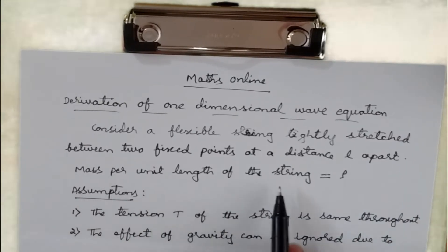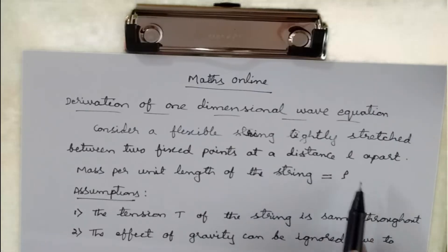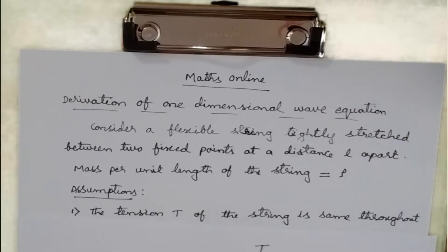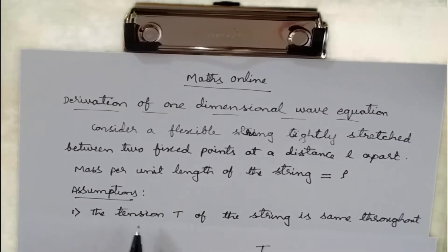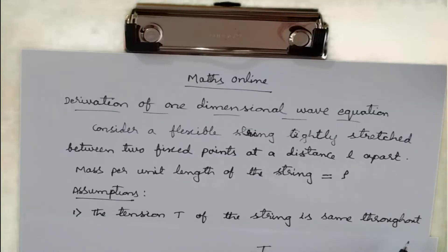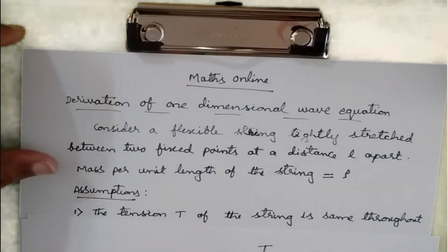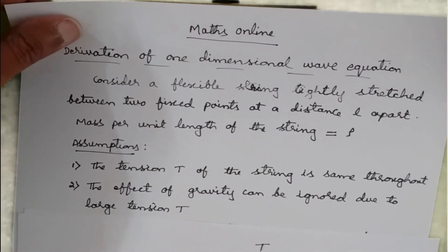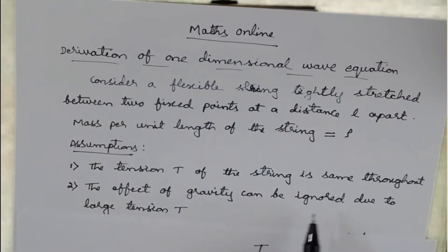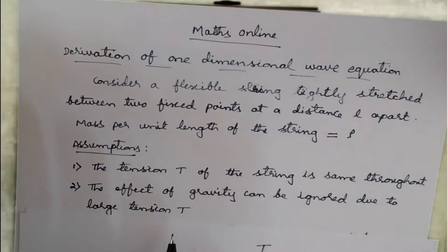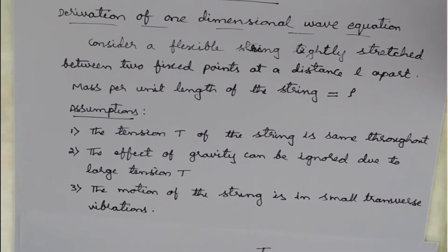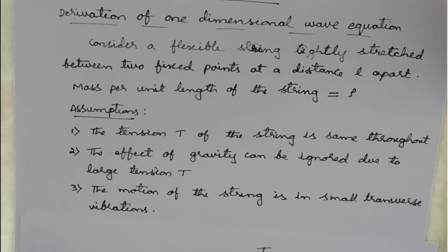We take the mass per unit length of this string to be rho, which represents the density. The assumptions are: first, tension T of the string is the same throughout; second, the effect of gravity is ignored due to the large tension of the string; third, the motion of the string involves only small transverse vibrations.